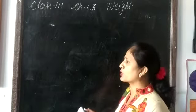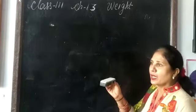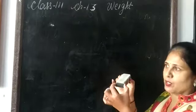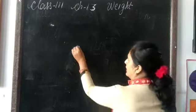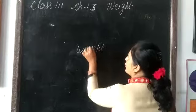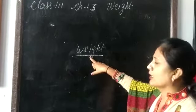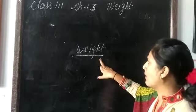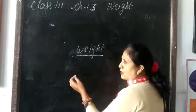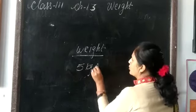An object is measured by how heavy it is. Suppose if we want to measure the weight of a duster — how heavy the duster is, that is the weight. If we go to a shop and tell the shopkeeper, please give some 5 kg or 2 kg — that is the weight.